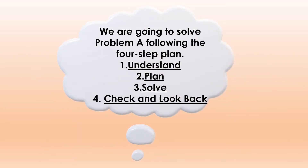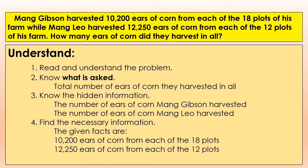We are going to solve Problem A following the four-step plan: Understand, plan, solve, check, and look back. First, understand — read and understand the problem. Mang Gibson harvested 10,200 ears of corn from each of the 18 plots of his farm, while Mang Leo harvested 12,250 ears of corn from each of the 12 plots of his farm. How many ears of corn did they harvest in all?